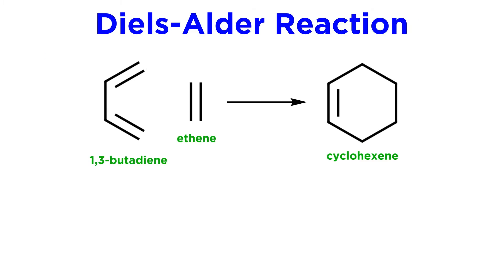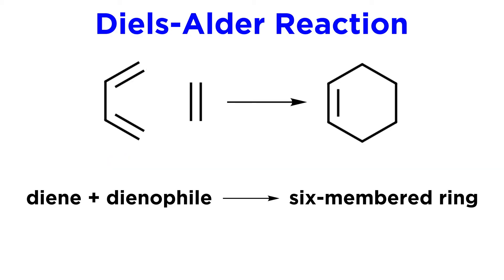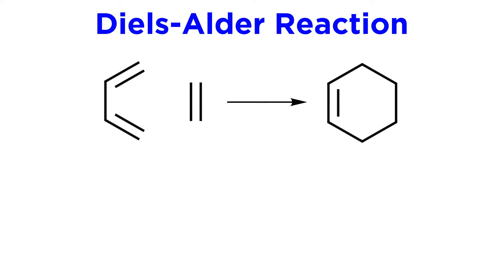Looking at the simplest possible Diels-Alder reaction, we have 1,3-butadiene and ethene which react to generate cyclohexene. Any Diels-Alder reaction will follow this basic setup, with a diene and dienophile going to generate a six-membered ring with a pi bond.